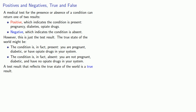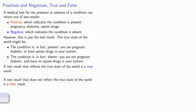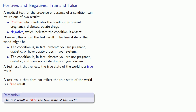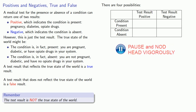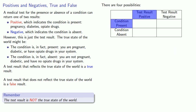A test result that reflects the true state of the world is a true result; a test result that does not reflect the true state of the world is a false result. And what is vitally important to keep in mind is that the test result is not the true state of the world. If the condition is present and the test result is positive, then the test result does reflect the true state of the world, so it's a true positive result.